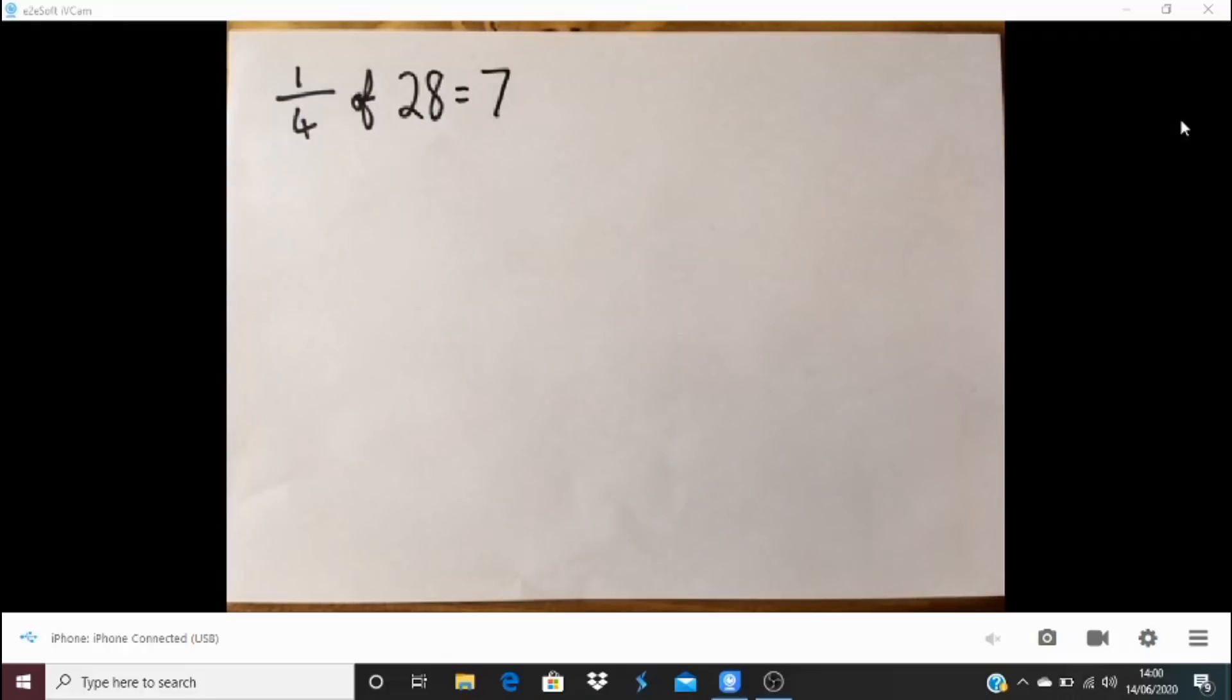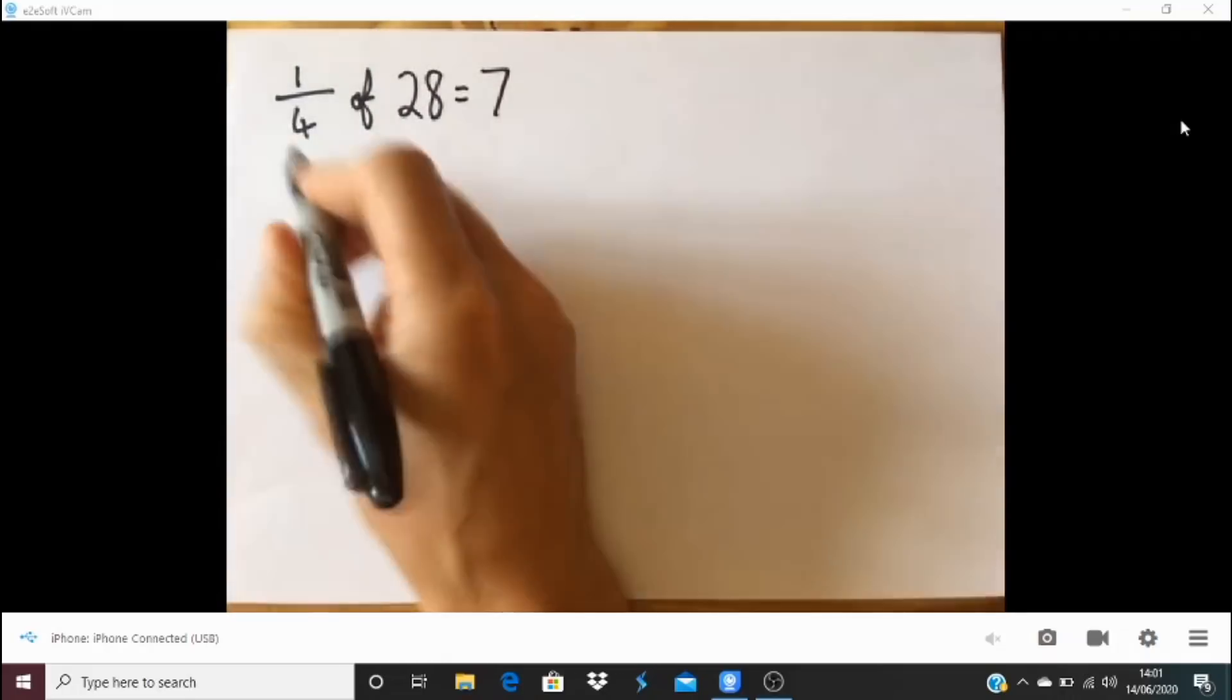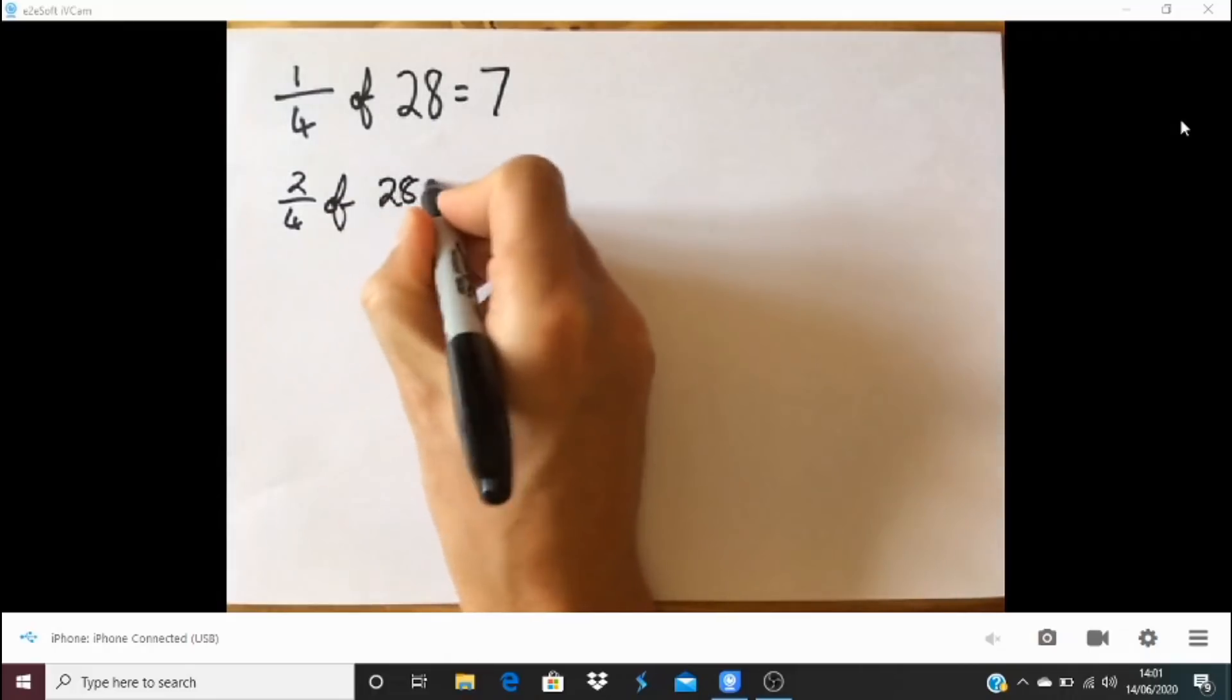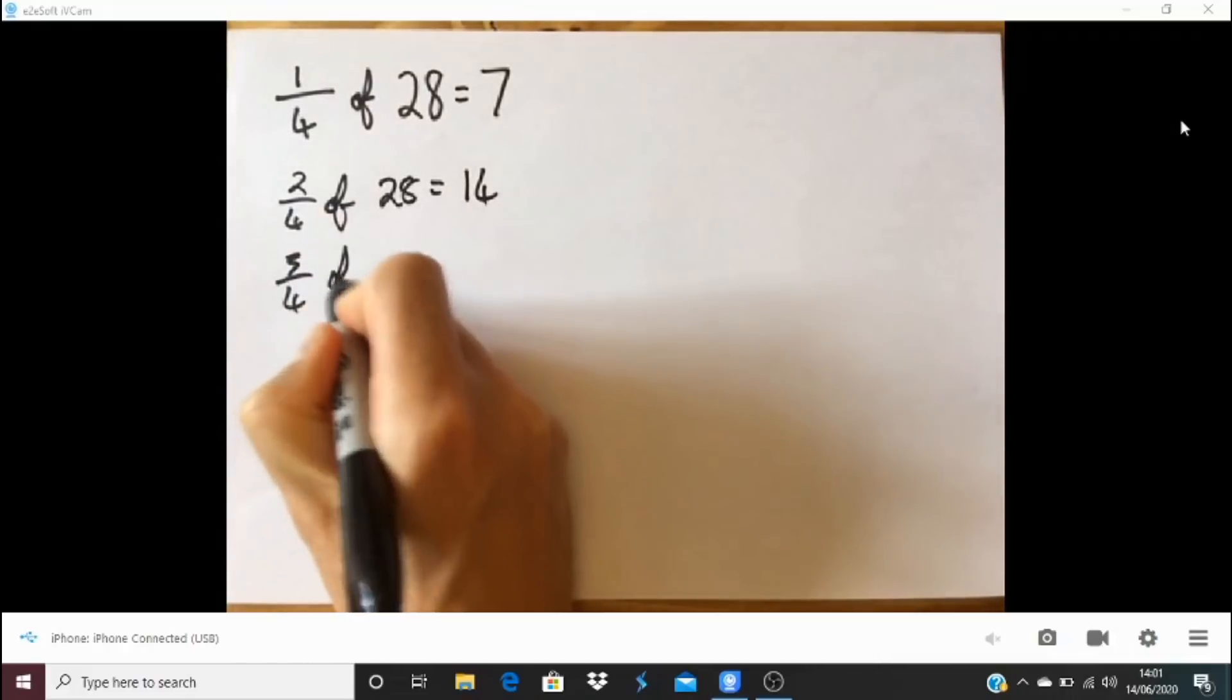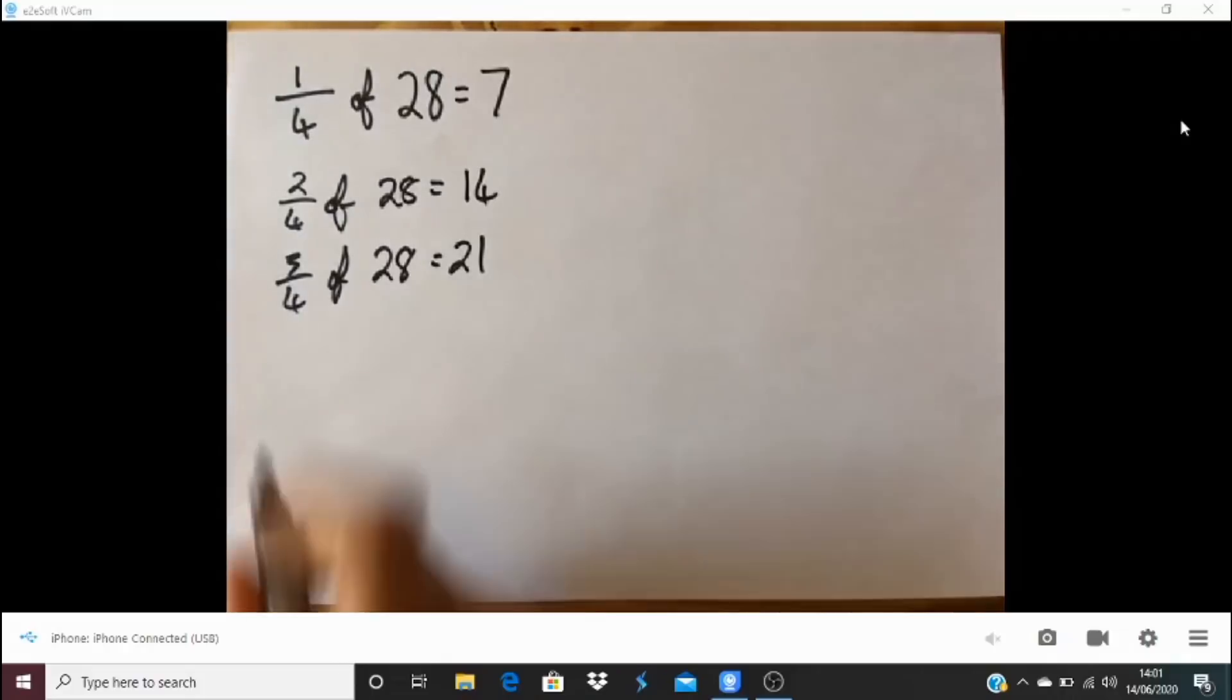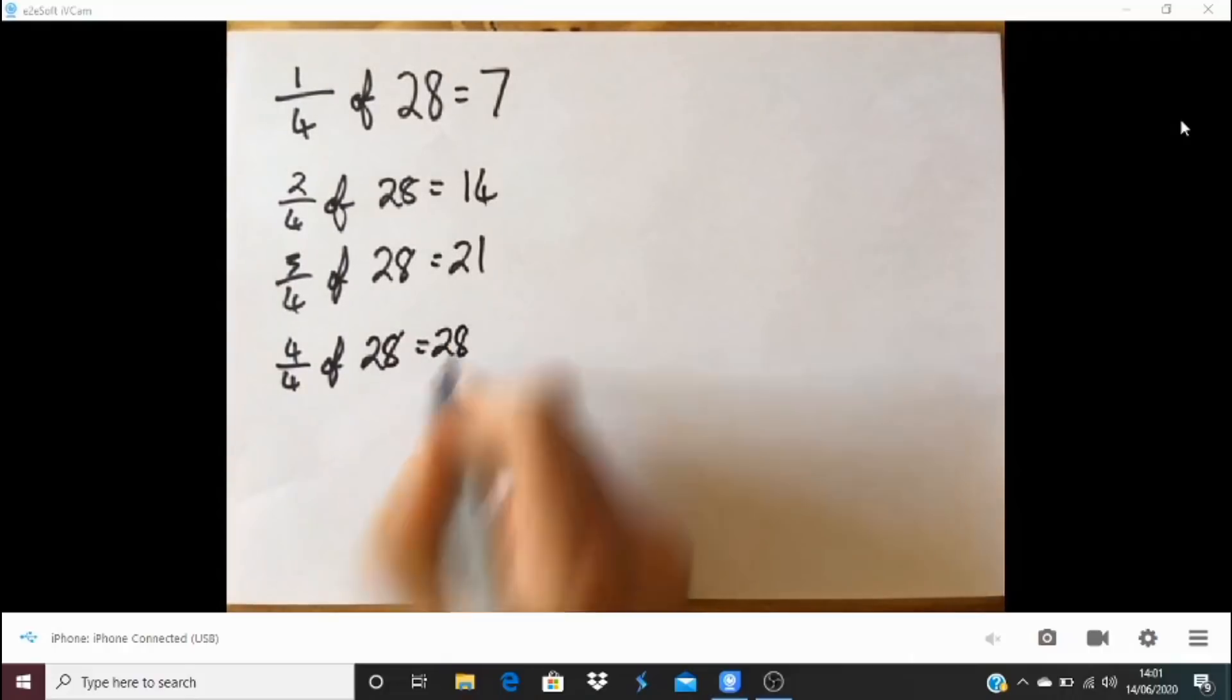Okay, let's have a look at some possibilities. So one quarter of 28 equals 7. So I guess we could have two quarters of 28. Well, that will be 14. It's another quarter. And then of course, three quarters of 28 is 21. It's another lot of 7. I guess you could have, if you like, four quarters of 28, and that would be 28. That would be all four quarters. So we'd have that whole 28 that's left.